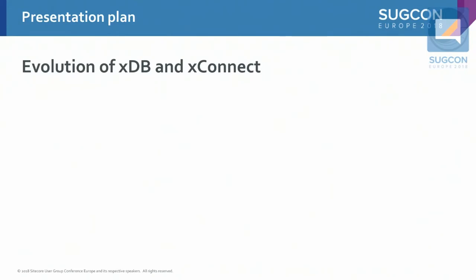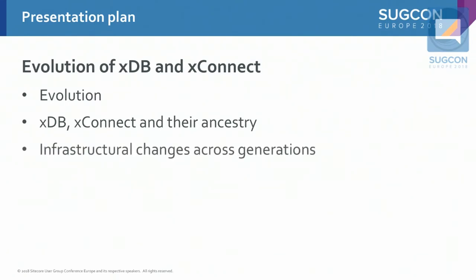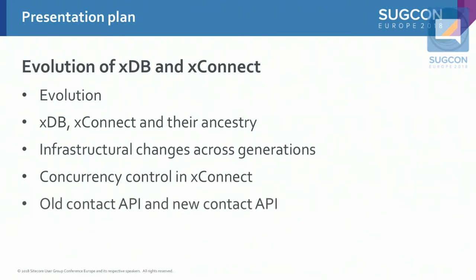What exactly am I going to present? There's a lot of evolution in the topic, so I'll talk about that a bit. There are words — XDB and XConnect — so I'll talk about those. I'll show you the changes in Sitecore core infrastructure across generations. I'll talk about concurrency control, and I'll compare the old APIs and the new APIs.